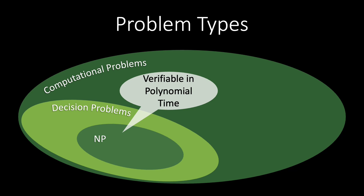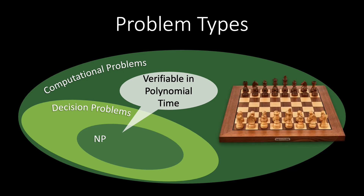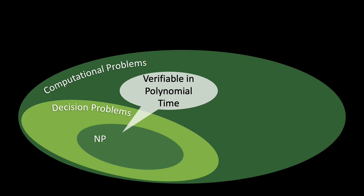But for some decision problems, we do not know how to verify a solution efficiently. For example, we do not know if it is possible to decide in polynomial time whether a chess player is going to win a chess position, assuming both players are playing optimally. So deciding whether a chess position is winning is probably not in NP.